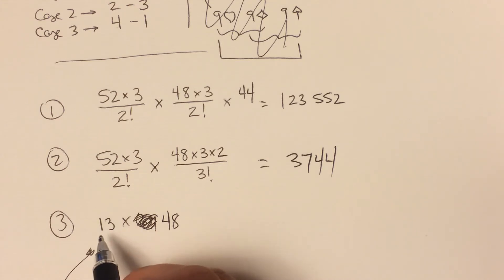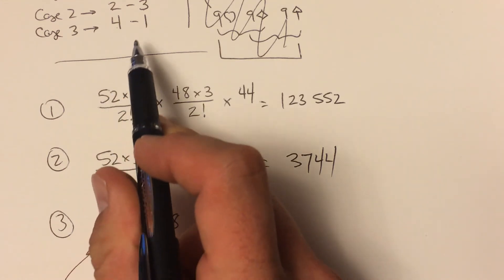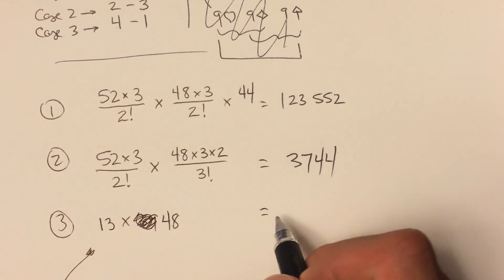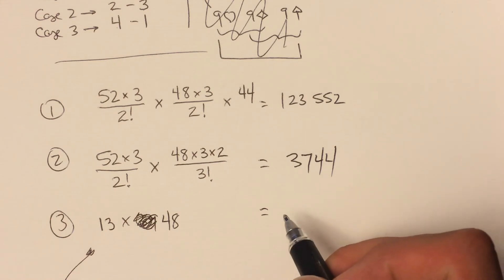And that can be this extra card that's left over on the side. So that would be 13 times 48. I didn't do that ahead of time, let me work that out... is 624.